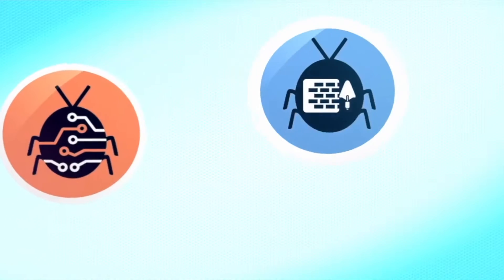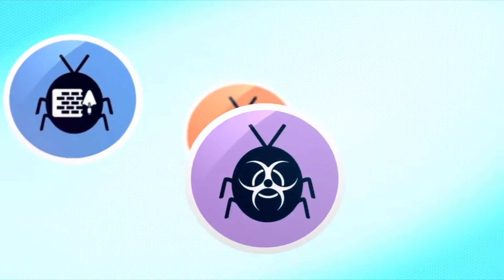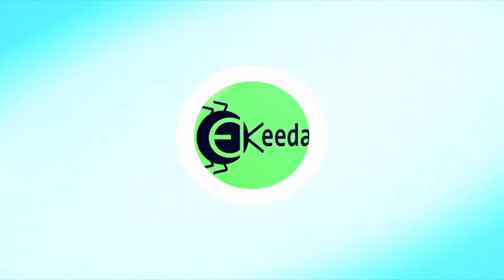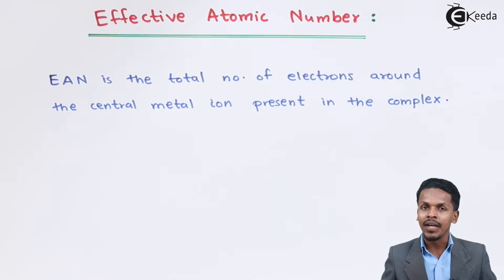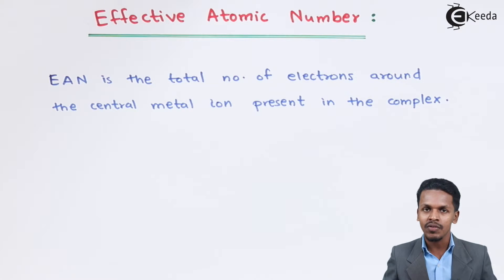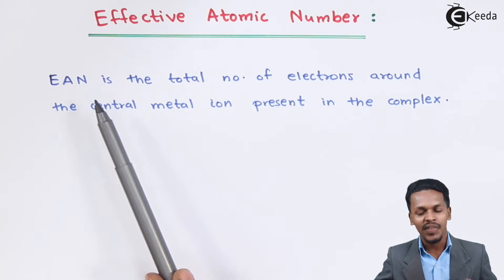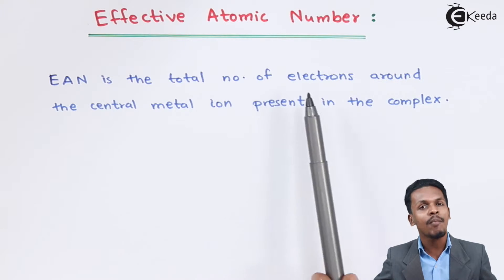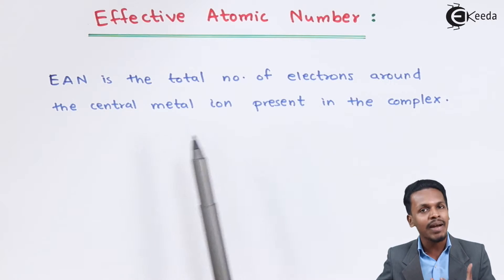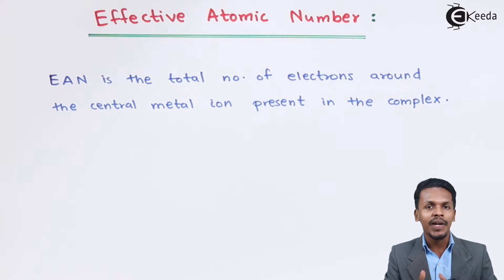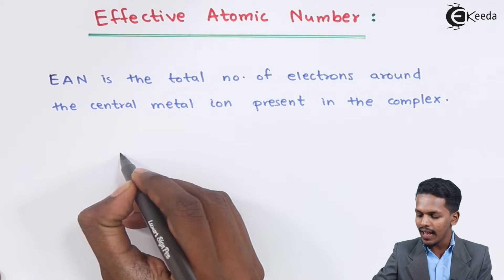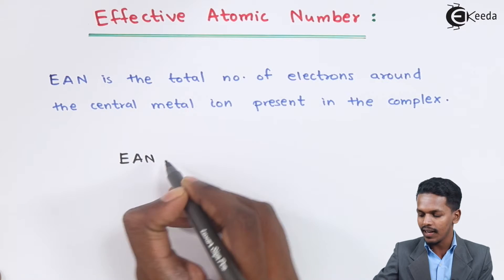In this topic we are going to talk about the Effective Atomic Number. So what is the Effective Atomic Number? The EAN is the total number of electrons around the central metal ion present in a complex. We can make a formula to calculate the EAN.